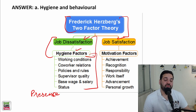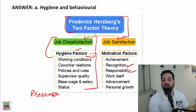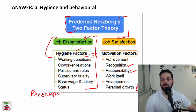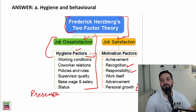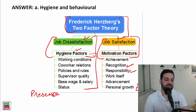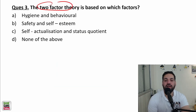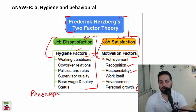There are certain factors whose presence is going to motivate you: recognition, responsibility, and career growth or job advancement — these are the job satisfiers, also called motivation factors. So as per Frederick Herzberg, these are the two factors. The two-factor theory is based on hygiene and motivation factors, or you can call them job satisfiers and dissatisfiers.